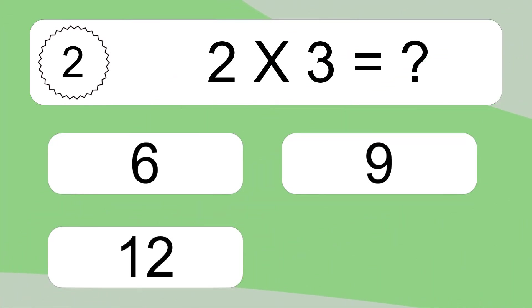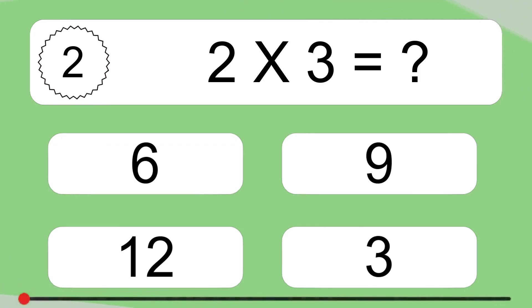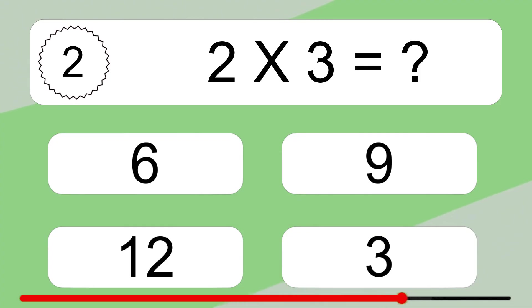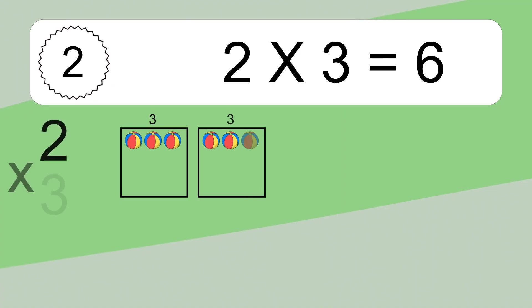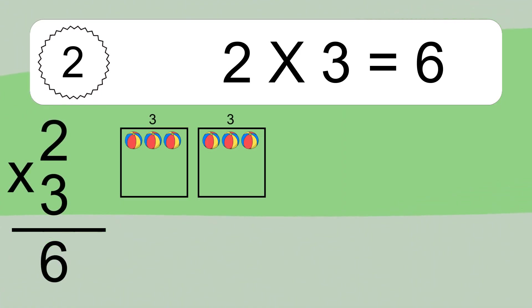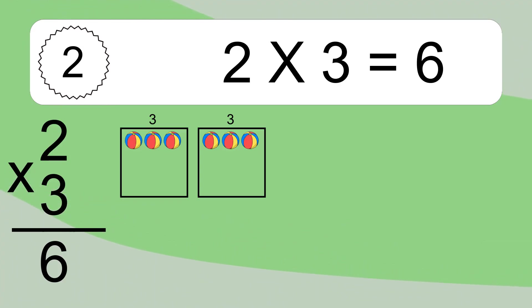Two times three equals what? Two times three equals six. We have two boxes, and each box has three colorful balls inside. If you count all the balls in all the boxes together, you will have two times three balls. This equals six balls.